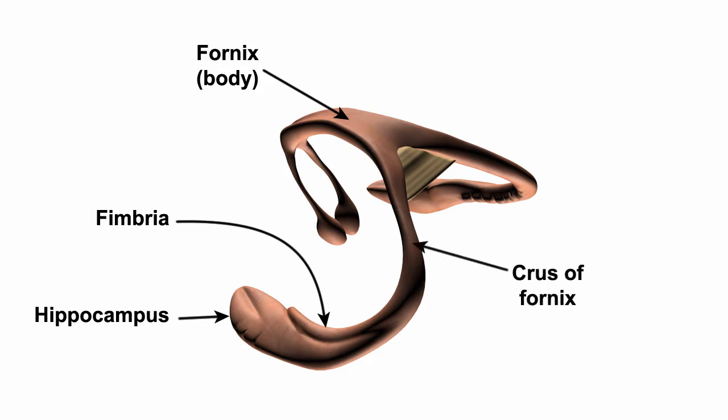Now, while most of the fibers within the fornix project ipsilaterally, some do cross the midline to project to the contralateral hippocampus at the hippocampal commissure, a thin sheet of white matter found just posterior to the body of the fornix. This is very important in hippocampal function, as we'll see later.